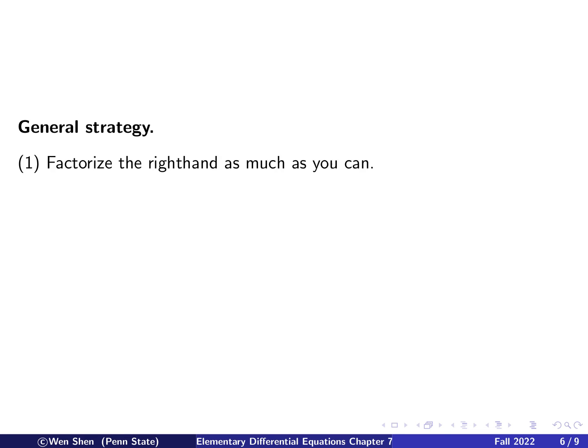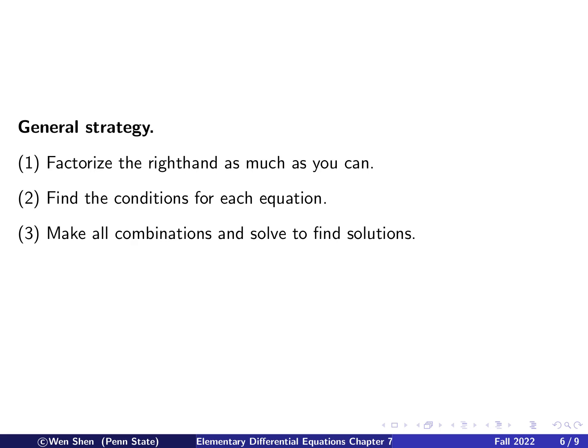Let's summarize a general strategy from this example. Step one: try to factorize the right-hand sides, the functions capital F and capital G, as much as possible. Then, using the factorized form, find the conditions for each equation. There may be multiple conditions per equation, so we make all possible combinations, and for each combination we solve and find possible solutions.